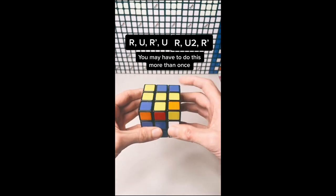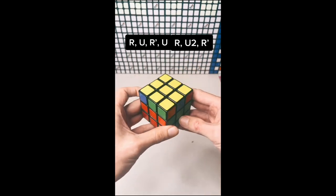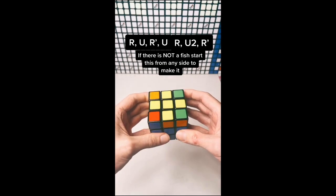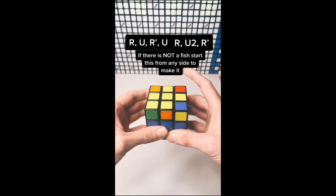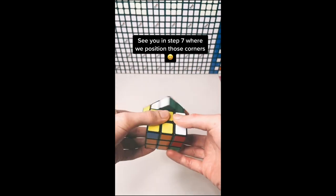You may have to do this more than once. If there is not a fish, start this from any side to make it. See you in step 7, where we position those corners.